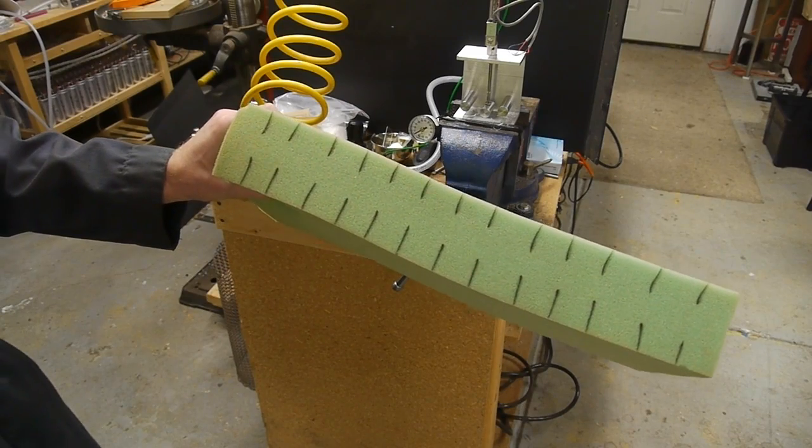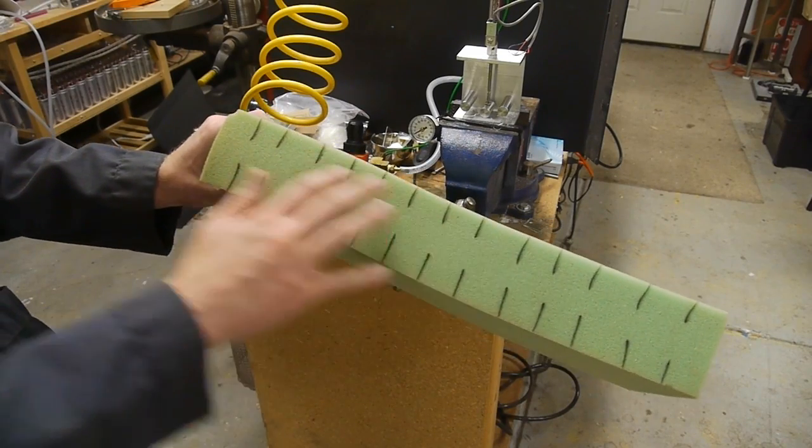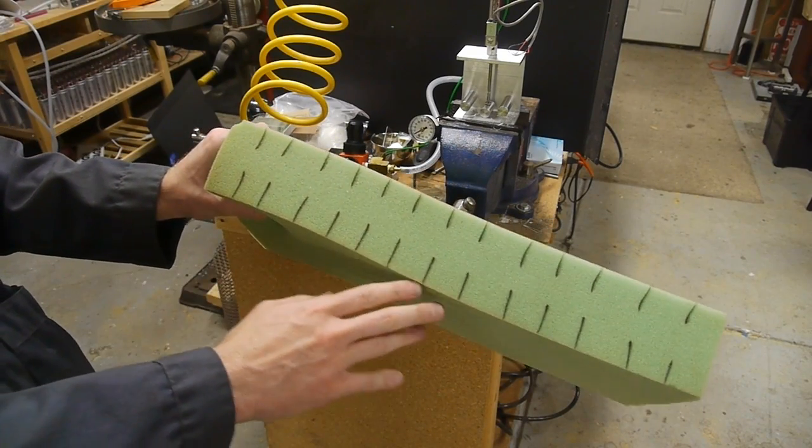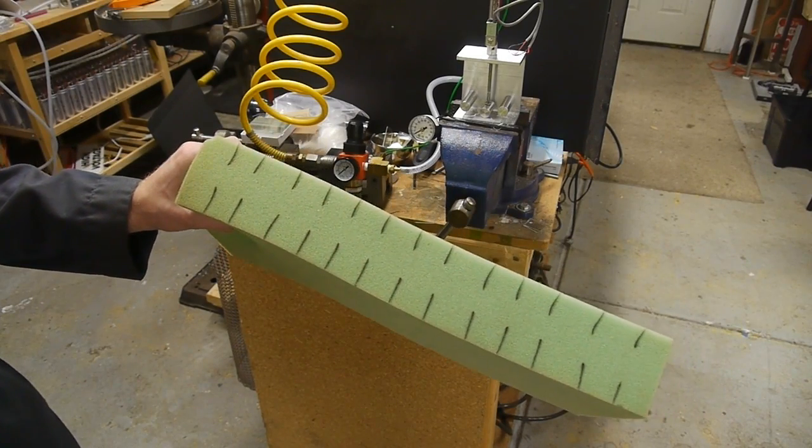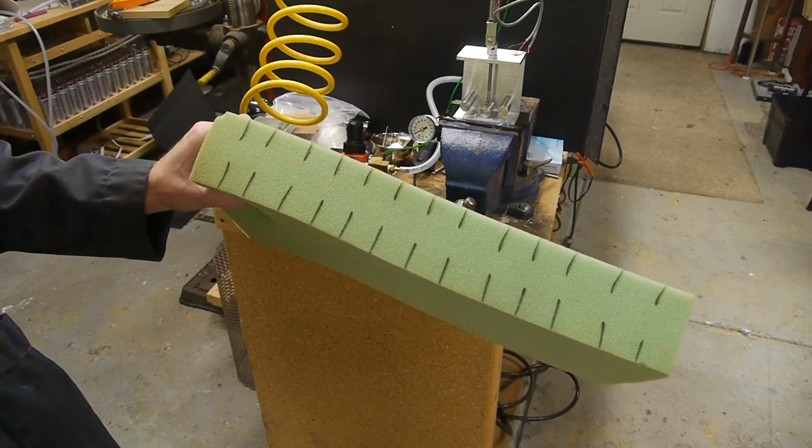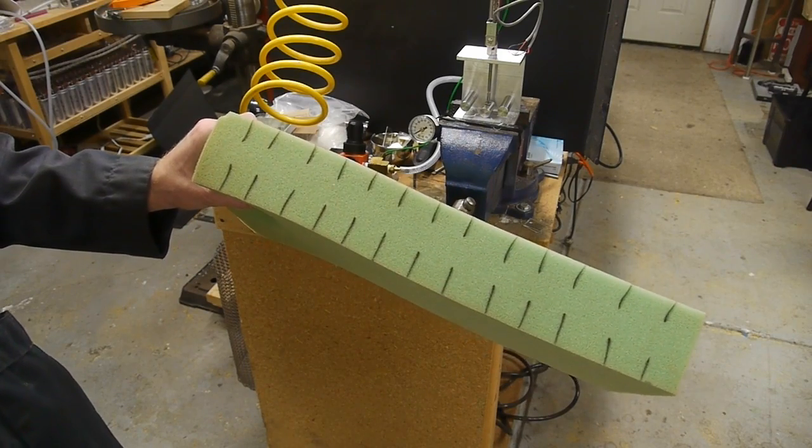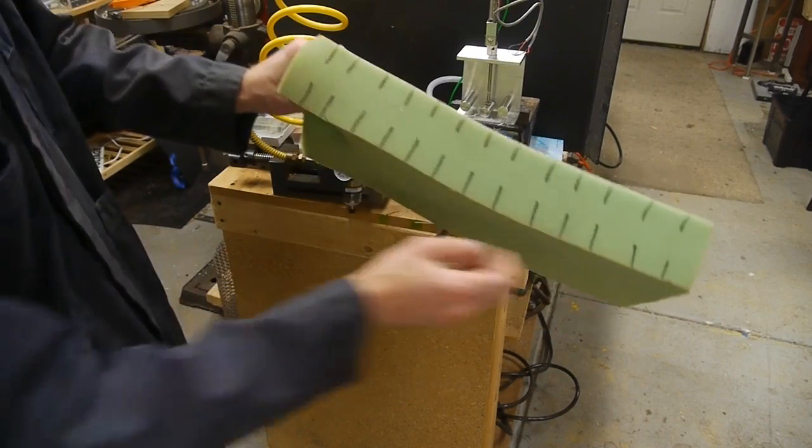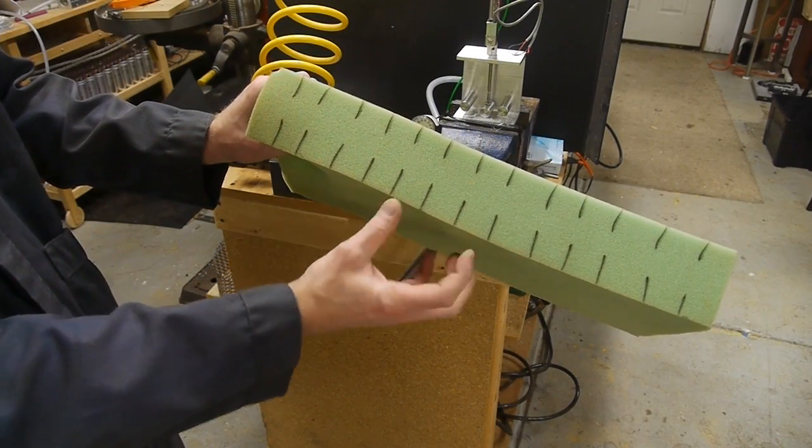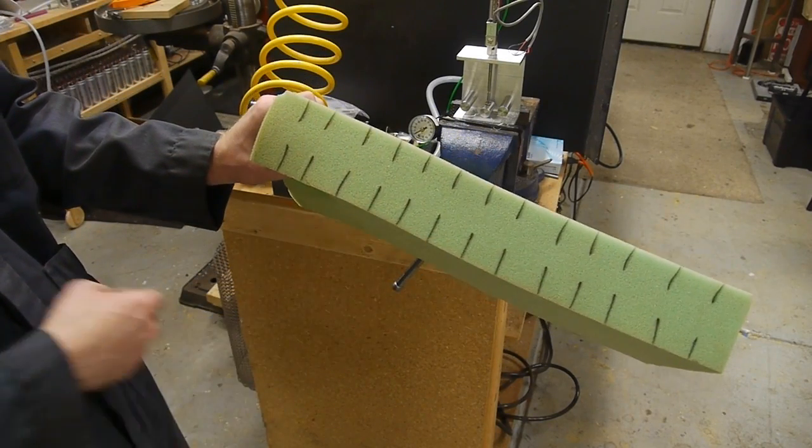Now glass like most brittle materials can handle the compression just fine. It's actually the tension that's a big problem, and the reason is that all pieces of glass in the world have microscopic defects in them, tiny little cracks. And when we bend the piece like this those little cracks propagate because they're being pulled apart by these tension forces.